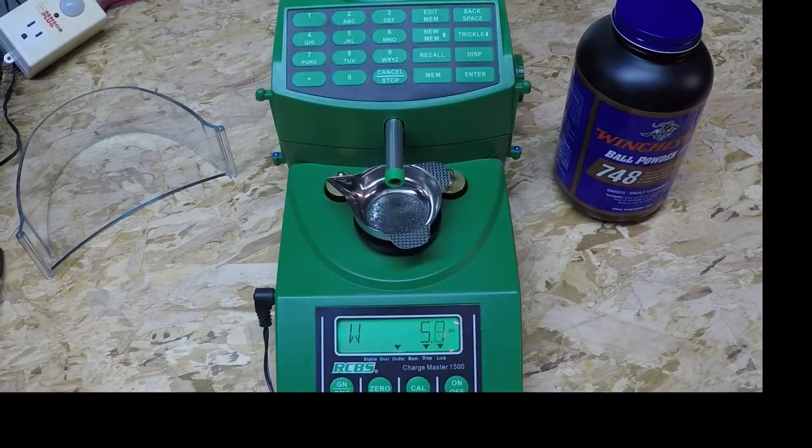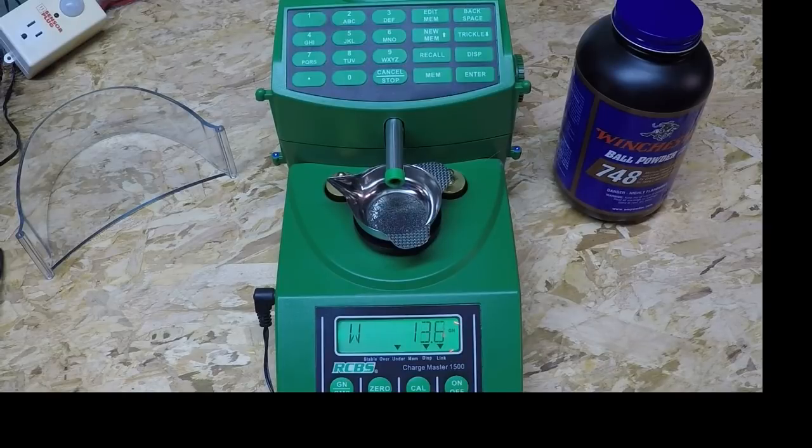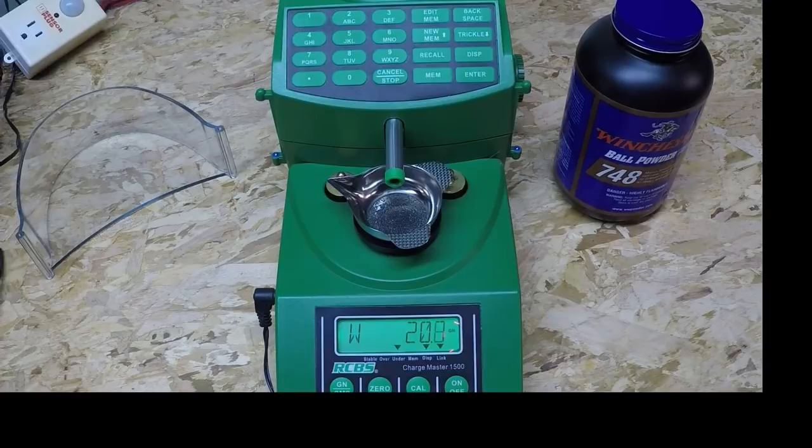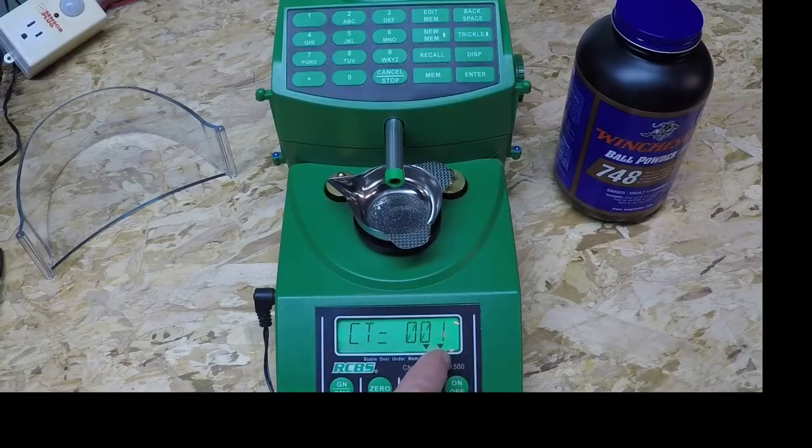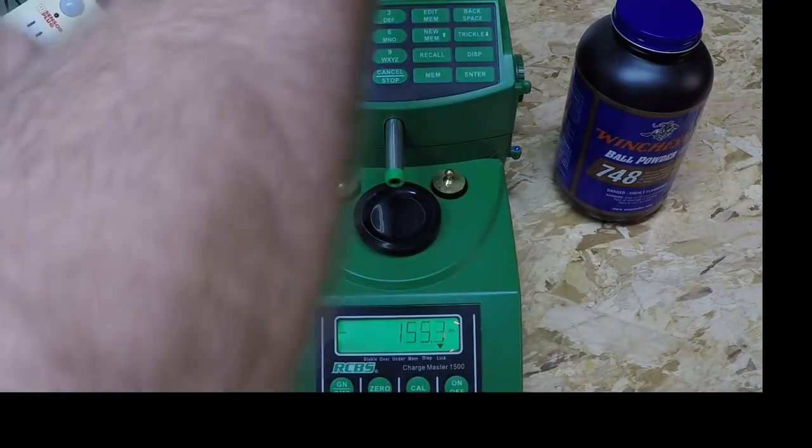Now this part is actually slower where it gets up to the 20 grains, but what speeds up dramatically is where it trickles. So now you're going up and it's dramatic. Let's look at the weight, 21.6. Let's do this again.